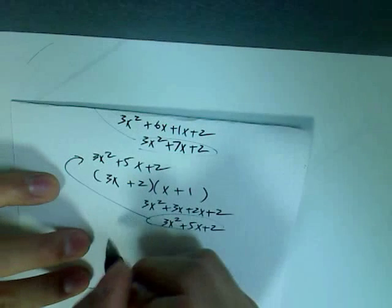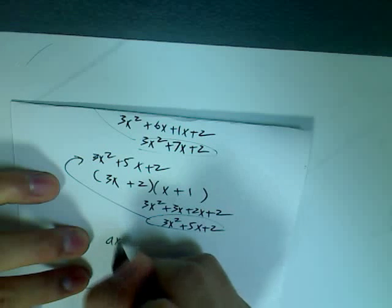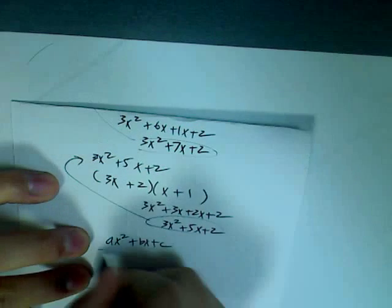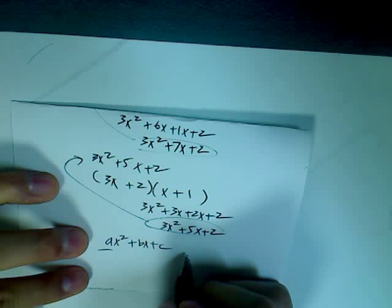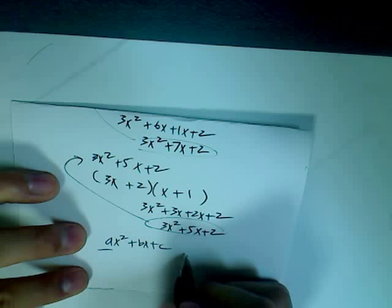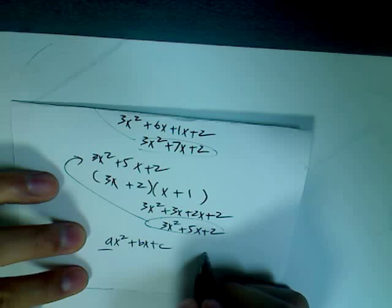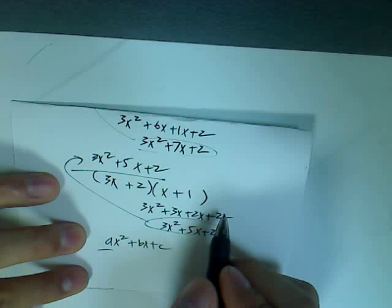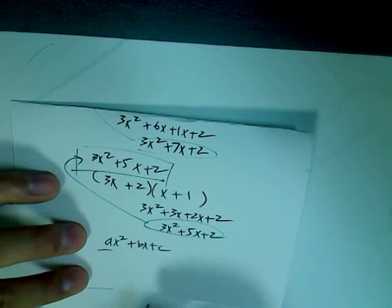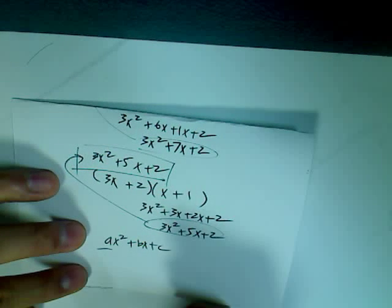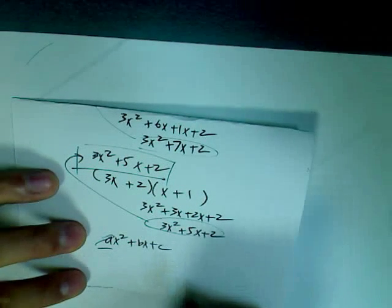As you can see, when you add a coefficient in front of the first term — where it's ax squared plus bx plus c — this adds to the guessing and checking you have to do to make sure the factored polynomials multiply together to equal the original polynomial. It's essentially the same as factoring simpler polynomials with no coefficient; it's just a matter of guessing and checking again.